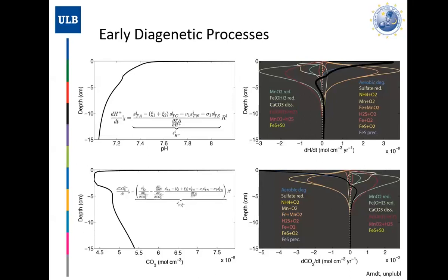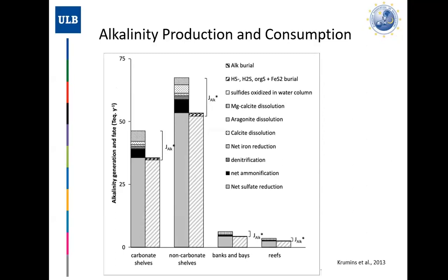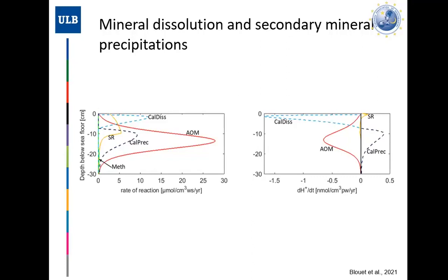Looking at typical natural alkalinity production and consumption in marine sediments — for instance on a carbonate shelf — the main contributor to alkalinity production is organic matter degradation, in particular sulfate reduction rates. Then you have carbonate precipitation acting the other way around. This then leads to another important aspect: not only the precipitation of authigenic clays, but also other minerals that dissolve or precipitate. We see a lot in the sediments that there's always a pull back to an equilibrium. Here you have simulated rates for a sediment subject to active methane venting, with methane coming from below, consumed in a very intense anaerobic methane oxidation zone.